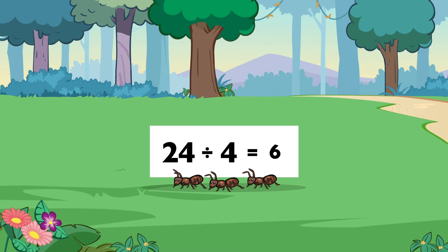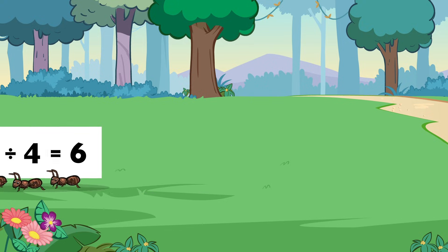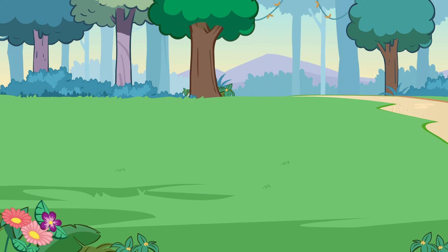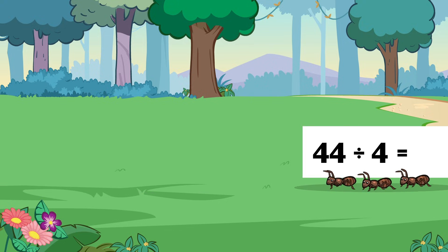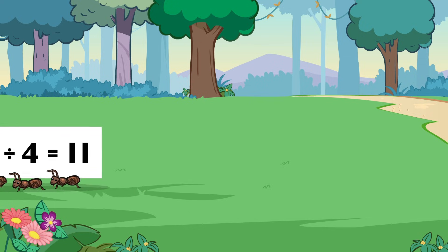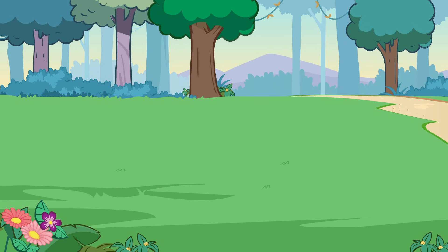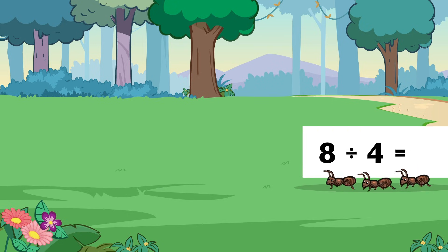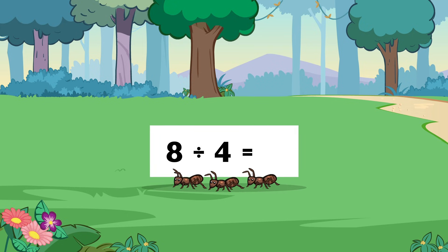Twenty-four divided by four equals six. Forty-four divided by four equals eleven. Eight divided by four equals two.